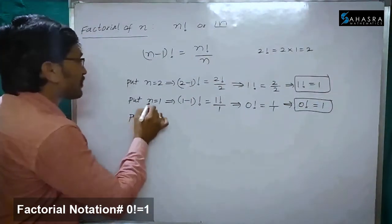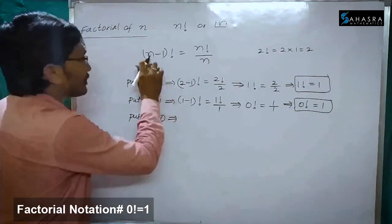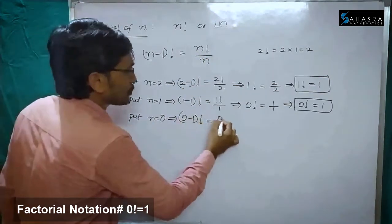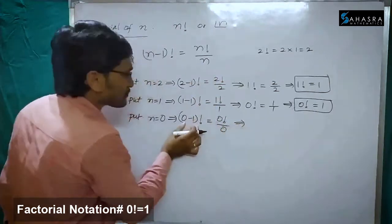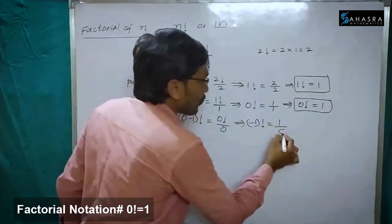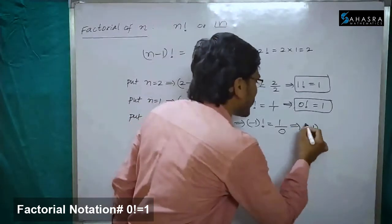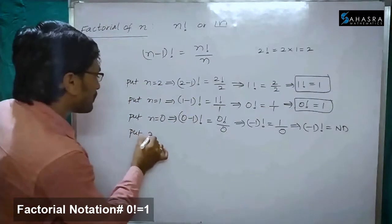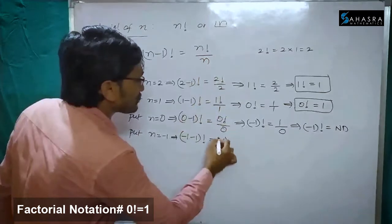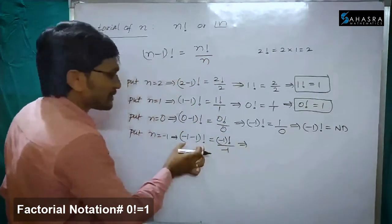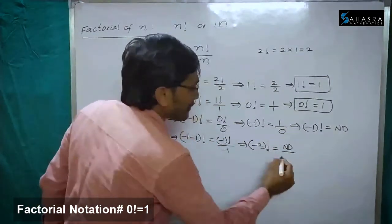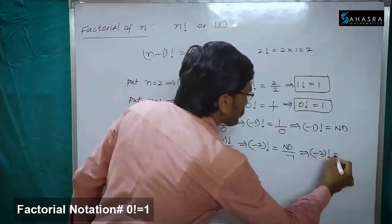Now put n is equal to 0 in the formula. So 0 minus 1 factorial is equal to 0 factorial by 0. 0 minus 1 is minus 1. So minus 1 factorial is equal to 1 by 0. But 1 by 0 is not defined. So minus 1 factorial is not defined. Now put n is equal to minus 1. This implies minus 1 minus 1, which is minus 2 factorial, is equal to minus 1 factorial by minus 1, which is not defined divided by minus 1 — that is also not defined.